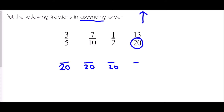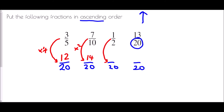We need to create equivalent fractions. How have I turned 5 into 20? I multiplied by 4, so 3 times 4 is 12. For ten into 20, that's times 2, so 7 times 2 is 14. For two into 20, that's multiplied by 10. And for twenty into twenty, it stays the same — thirteen over twenty.